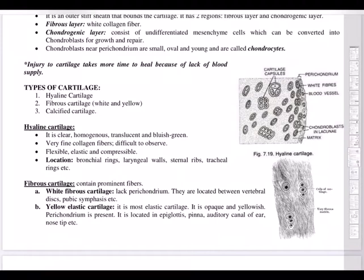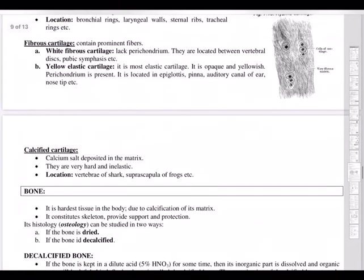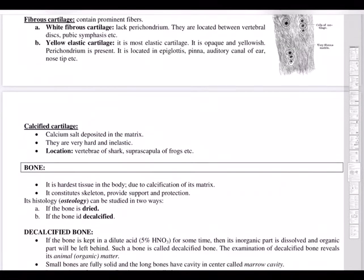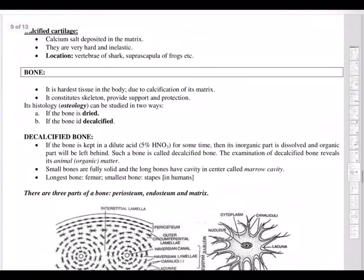The most important type of cartilage is hyaline cartilage — it is clear, homogeneous, translucent, and bluish-green with very fine collagen fibers, making it flexible and elastic. It is located in tracheal rings, laryngeal walls, sternal ribs, and bronchial rings. Fibrous cartilage contains white and yellow fibers and is present in the epiglottis, ear, and nose. Calcified cartilage is found in vertebrates.